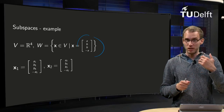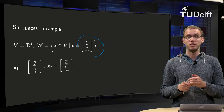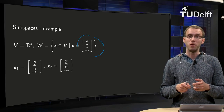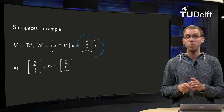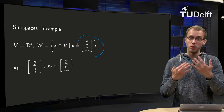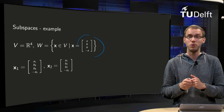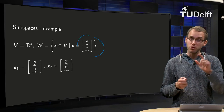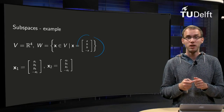We need to check the conditions. Is the zero vector in the subspace? Well, yes — you can choose A and B equal to zero, and then you get (0, 0, 0, 0), so the zero vector is in W. Then we have to check the other two conditions.